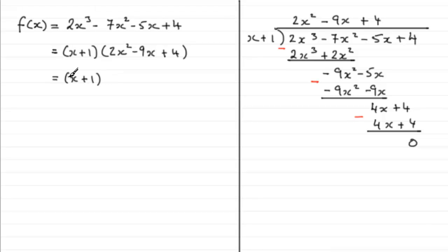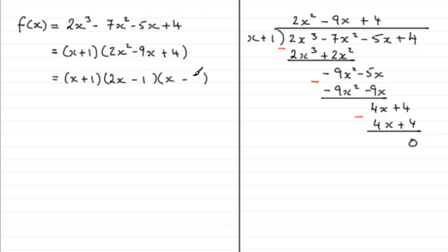So we've got (x+1), and splitting this quadratic factor into two linear factors, we can see it's got to be 2x and x, and it's got to be minus 1 and minus 4. If you check that out, that expansion does give you 2x²-9x+4.